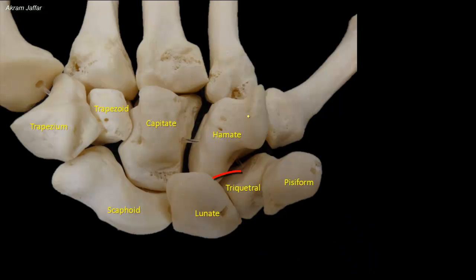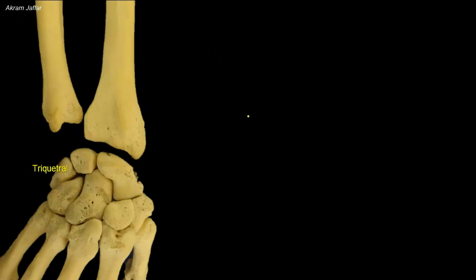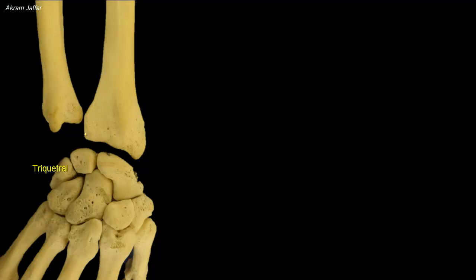Note that the lunate rolls prominently under the palpating fingertip during full flexion of the wrist. The third bone of the proximal row is the triquetral, which is pyramidal in shape — triquetras means three-cornered. The triquetral articulates with the triangular fibrocartilage, or triangular disc, located at the distal radio-ulnar joint. The disc is triangular in shape; its base is attached to the radius and its tip to the styloid process of the ulna. It separates the wrist from the distal radio-ulnar joint.